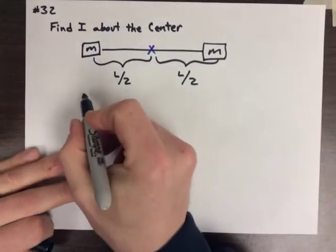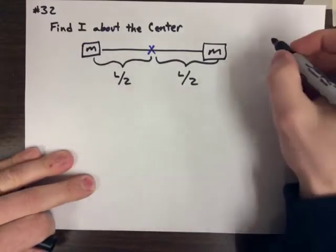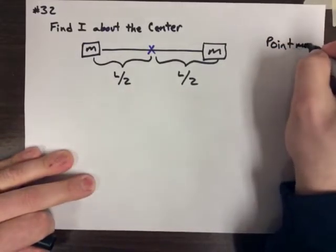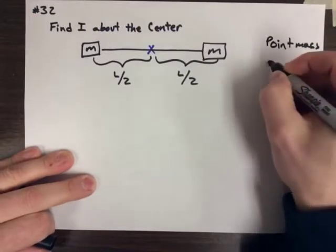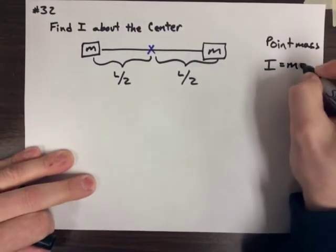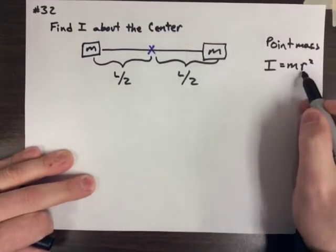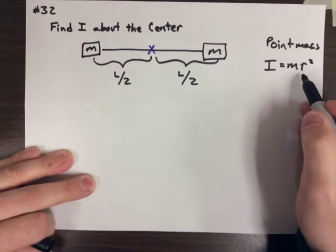So, let's go ahead and find the moment of inertia for a point mass. For a point mass, my moment of inertia is going to be just mr squared, where r is from the axis of rotation to the mass.